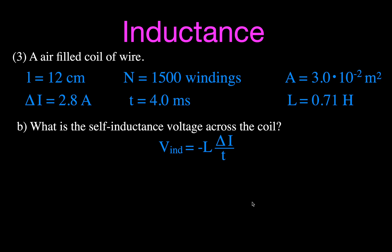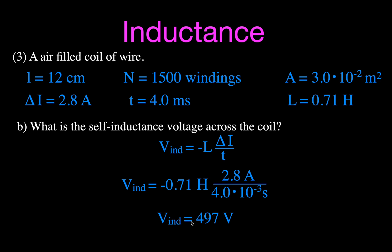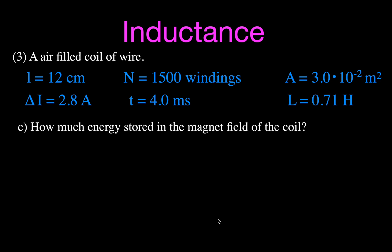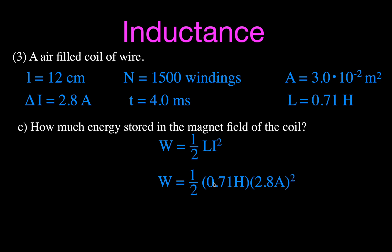Part B — calculate the self-induced voltage when the current increases by 2.8 amperes over 4 milliseconds: V equals minus L times delta I over delta t equals minus 0.71 times 2.8 divided by 4 times 10 to the minus 3, giving minus 497 volts. Part C — calculate the energy stored in the magnetic field: using W equals one half L times I squared, with L equals 0.71 Henry and I equals 2.8 amperes, the energy stored is 2.78 joules.